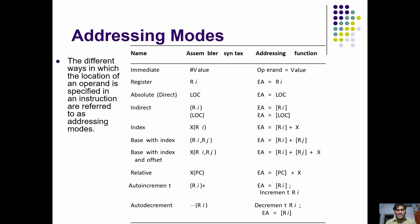Next is base with index addressing mode. Here the address location is stored within two registers. The combination of both registers gives the effective address location, and the data is accessed from that effective address. Next, base with index and offset also adds an external offset value to the two register values.